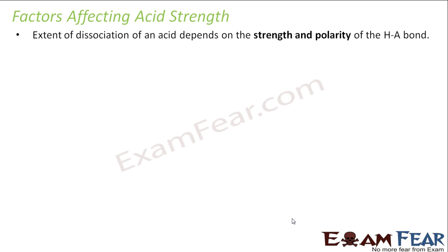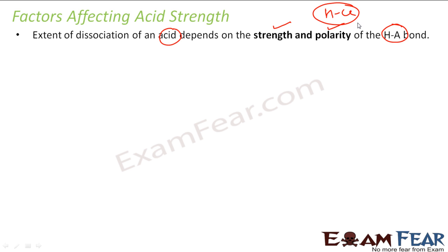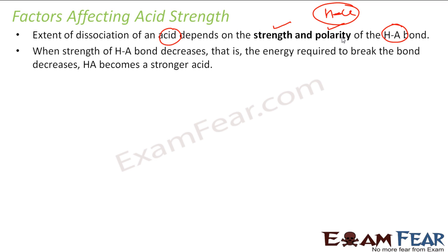The extent of dissociation of an acid depends on the strength and polarity of the H-A bond. For example, in HCl, the H-Cl bond strength and polarity will determine how much HCl dissociates into H⁺ and Cl⁻. If the bond strength is weak, less energy is required to break it and the acid becomes a strong acid. In HCl, the bond strength is weak, so it breaks easily into H⁺ and Cl⁻ — making it a strong acid.